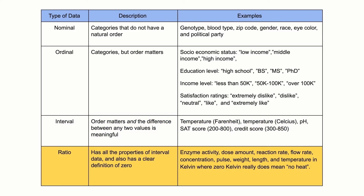Last, ratio data has all the properties of interval data and also has a clear definition of zero. When a ratio variable equals zero, there is none of that variable. Examples of ratio variables include enzyme activity, dose amount, reaction rate, flow rate, concentration, pulse, weight, length, and temperature in Kelvin, where zero Kelvin really does mean no heat. With ratio data, the ratio of two measurements has a meaningful interpretation.